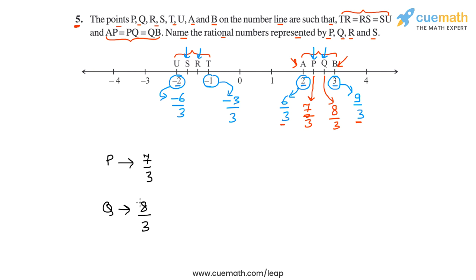And similarly, let's determine what R and S represent. So R and S divide the interval between U and T into three equal parts. And since U is minus 6 by 3, and T represents minus 3 by 3,